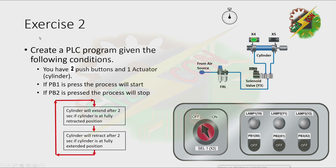Let's go to our next exercise — Exercise 2. Create a PLC program given the following conditions. You have two push buttons and one actuator. If PB1 is pressed, the process will start. If PB2 is pressed, the process will stop.